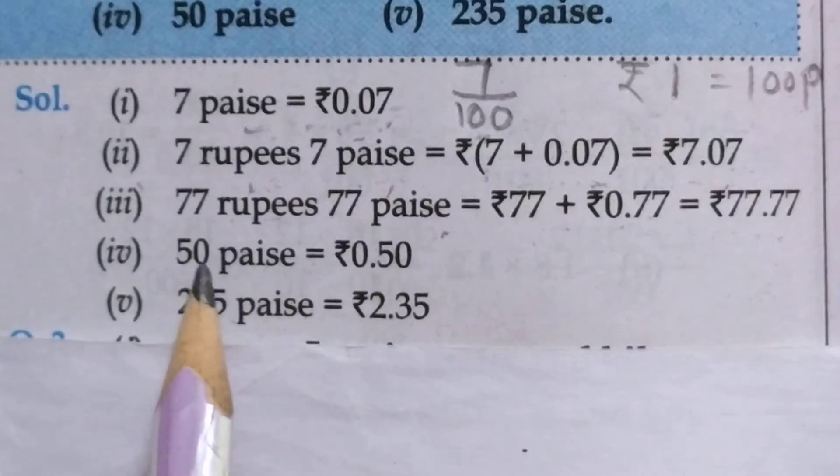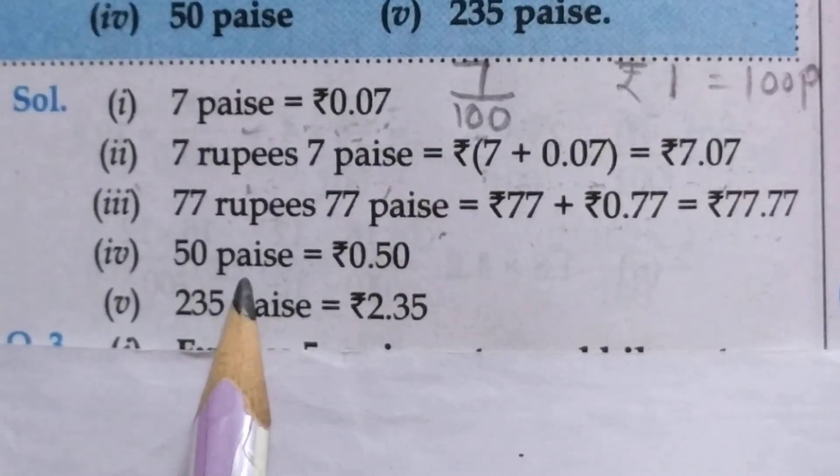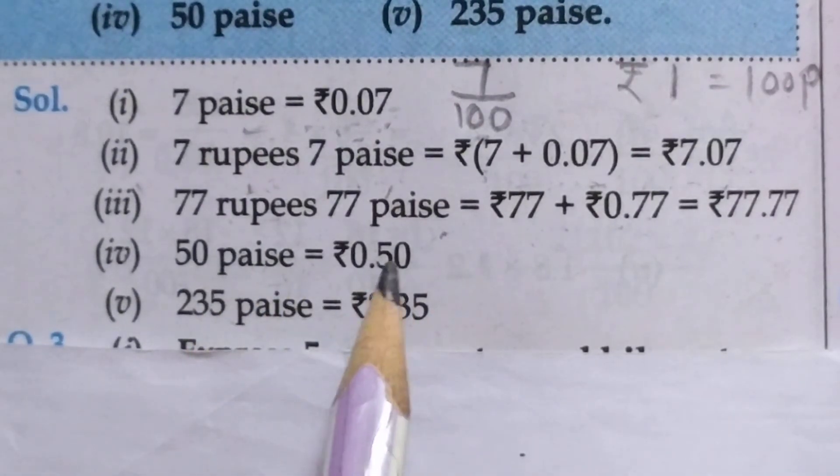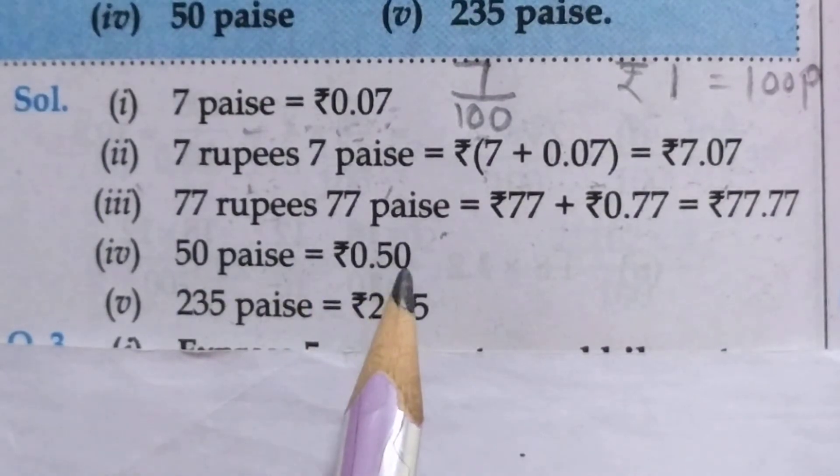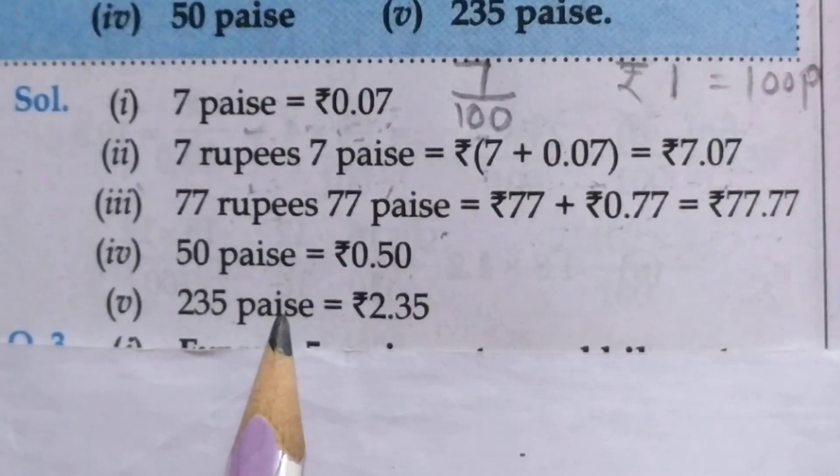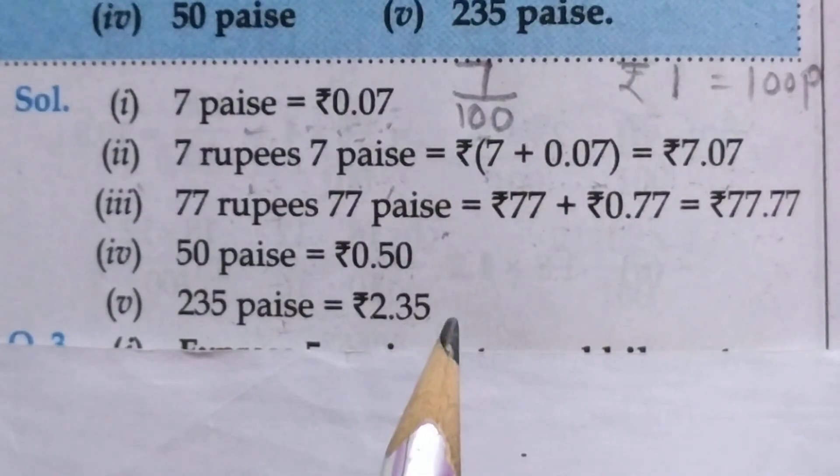Next, fourth one, 50 paise. Convert it into rupees. Divide by 100 of course. Put the point after two digits. 1, 2. Point. So, rupees 0.50. Now, fifth one, 235 paise. Convert it into rupees. Divide by 100. Put the point after two digits. 1, 2. Point. So the answer will be rupees 2.35.